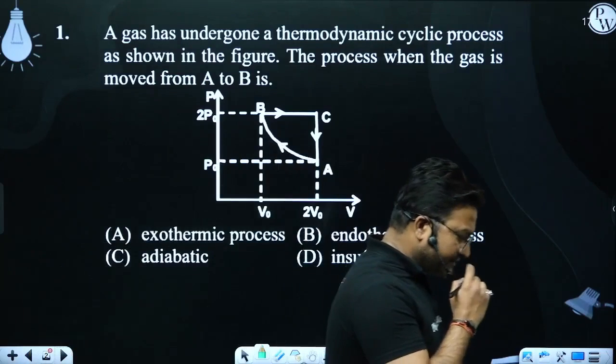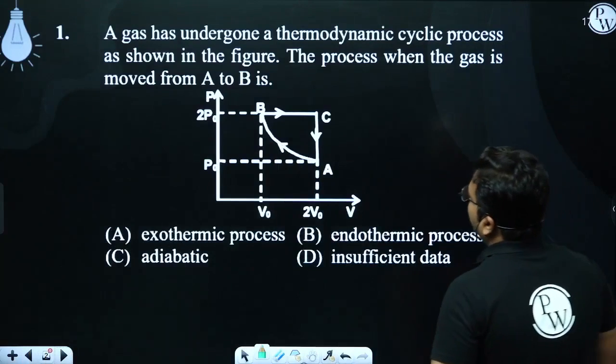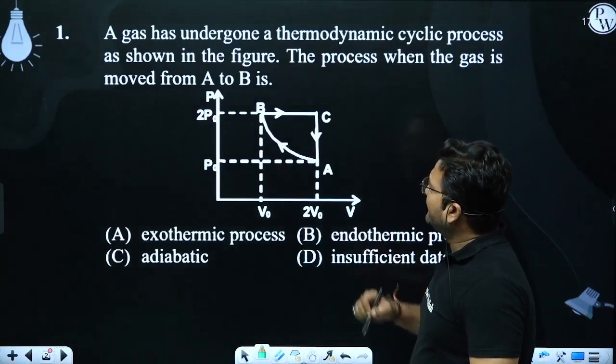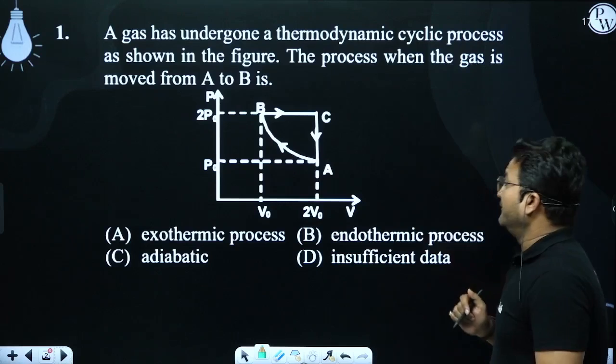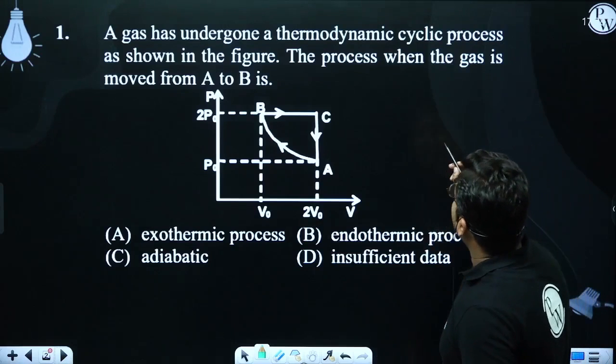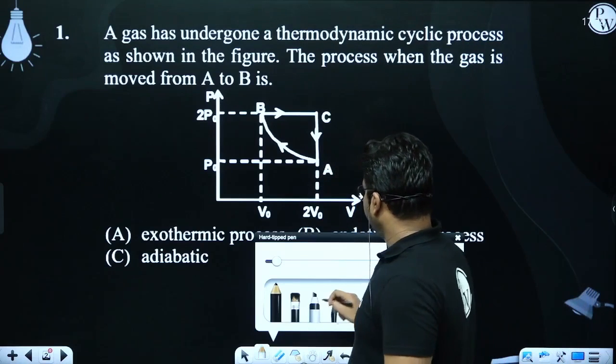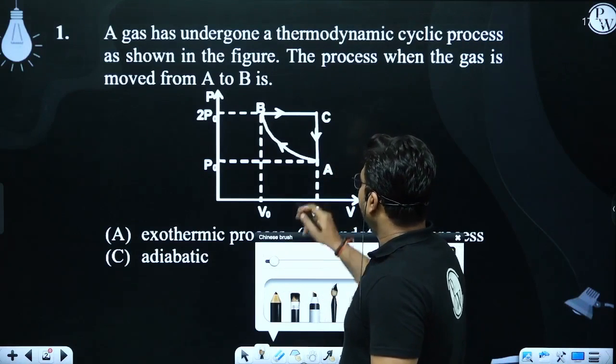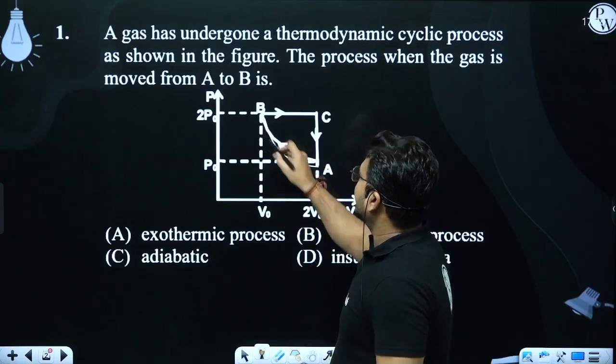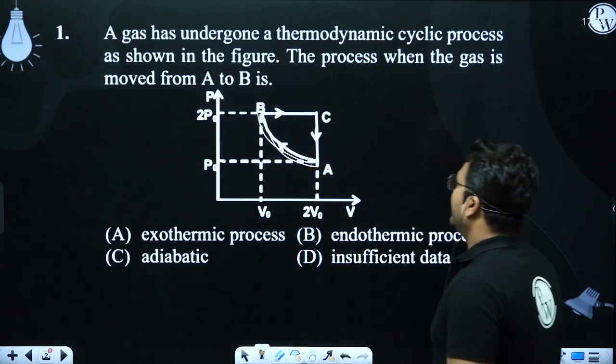So let's begin with our first question, which is a pretty simple one. It has been said that there is a cyclic process which has been given in a PV diagram. And the question is that when the gas goes from A to B, what about this process?